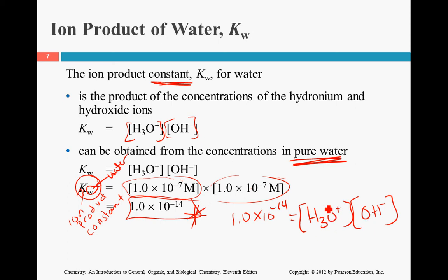Remember, as one goes up the other one goes down, but they always end up balancing out to be 1 times 10 to the negative 14. To put that into your calculator, it would be 1.0, then the EXP or EE button — push it once — then negative 14.